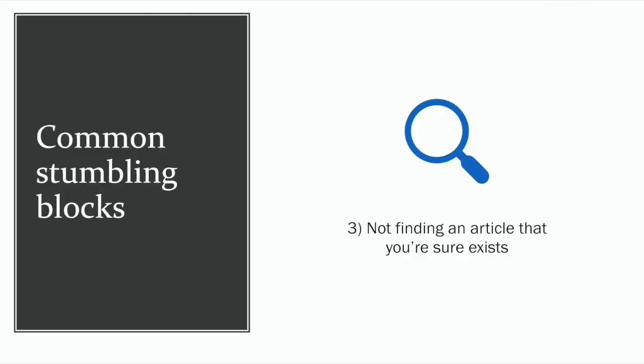Another area of confusion is doing a search and not finding what you're looking for. There could be a variety of reasons for this. Remember that the search bar in Grove Music Online is more finicky than something like Google — make sure you've spelled the word or name correctly, and make sure you're only using one or two search terms.